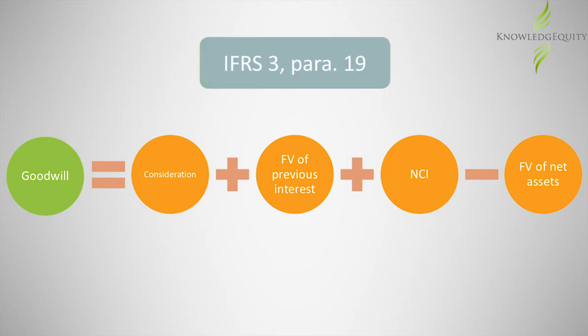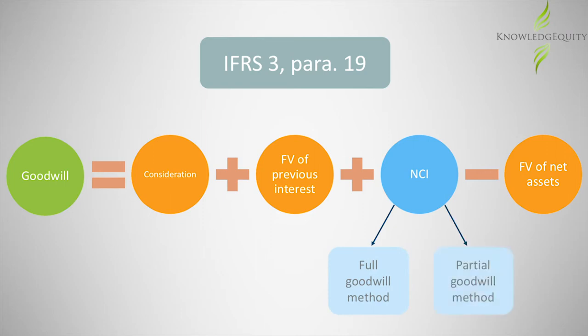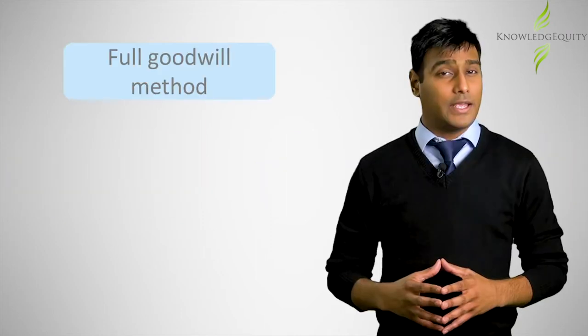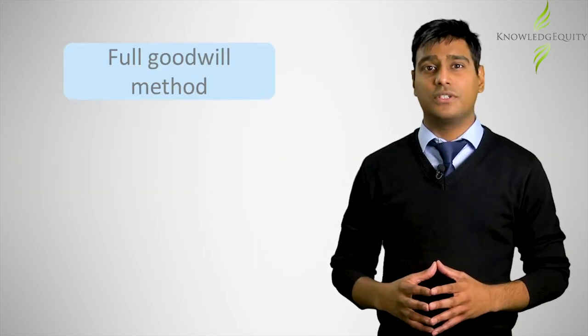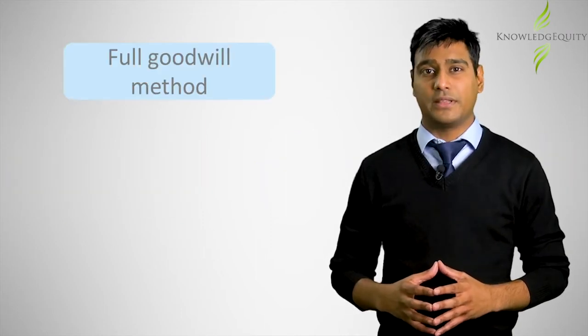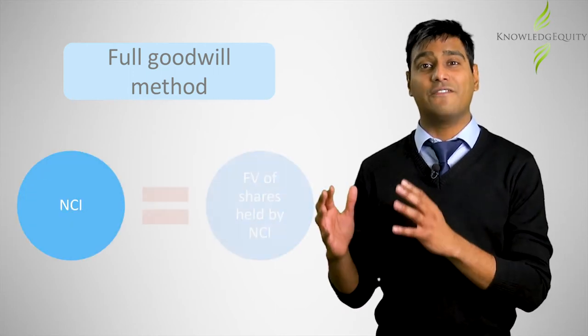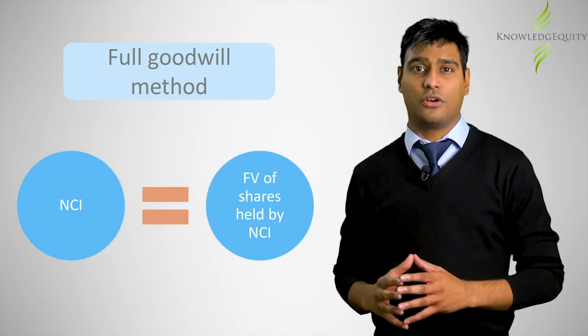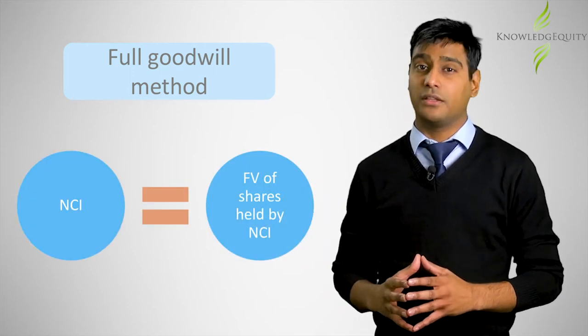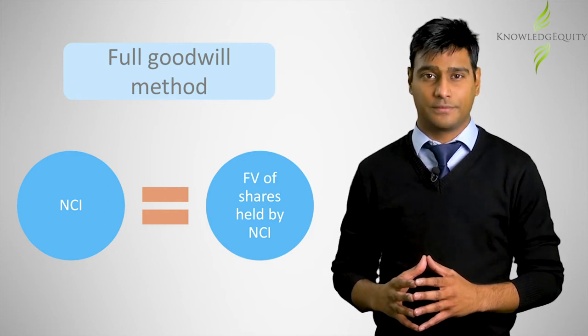IFRS 3 paragraph 19 allows a choice for the measurement of non-controlling interest — that is, the full goodwill method or the partial goodwill method. If the entity chooses the full goodwill method, then it would measure the non-controlling interest using the fair value of shares held by the non-controlling interest shareholders.